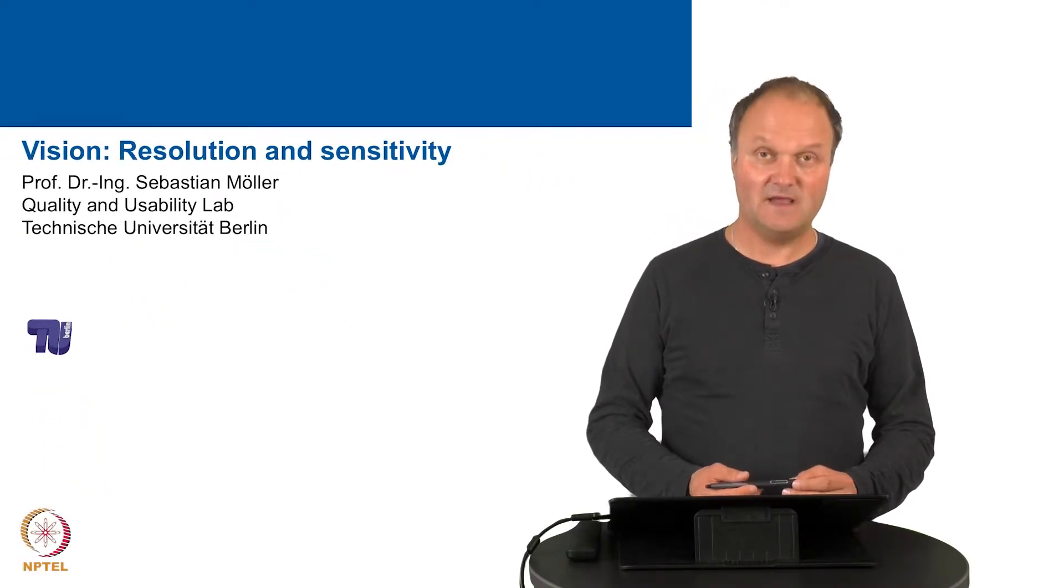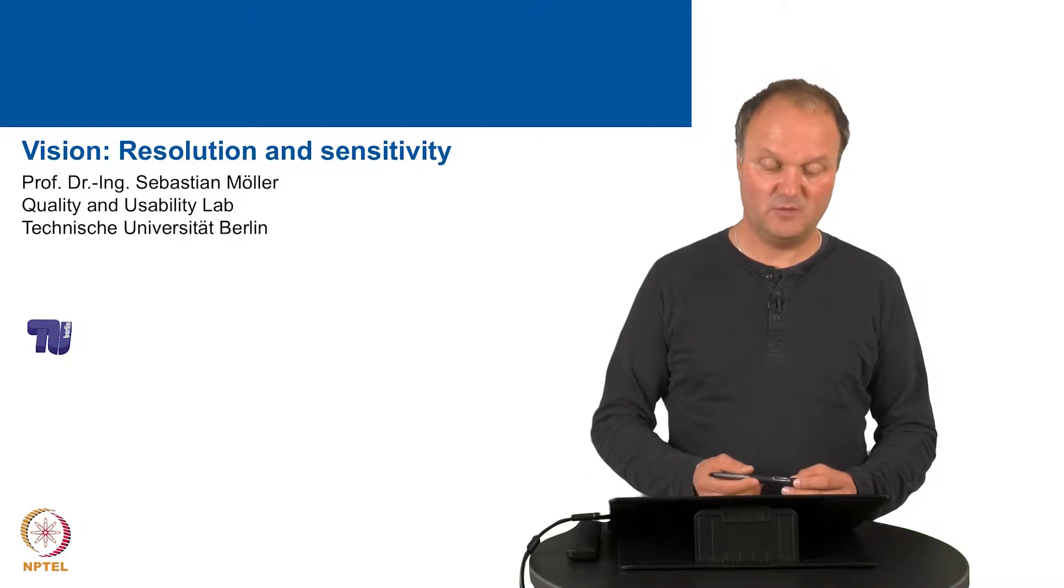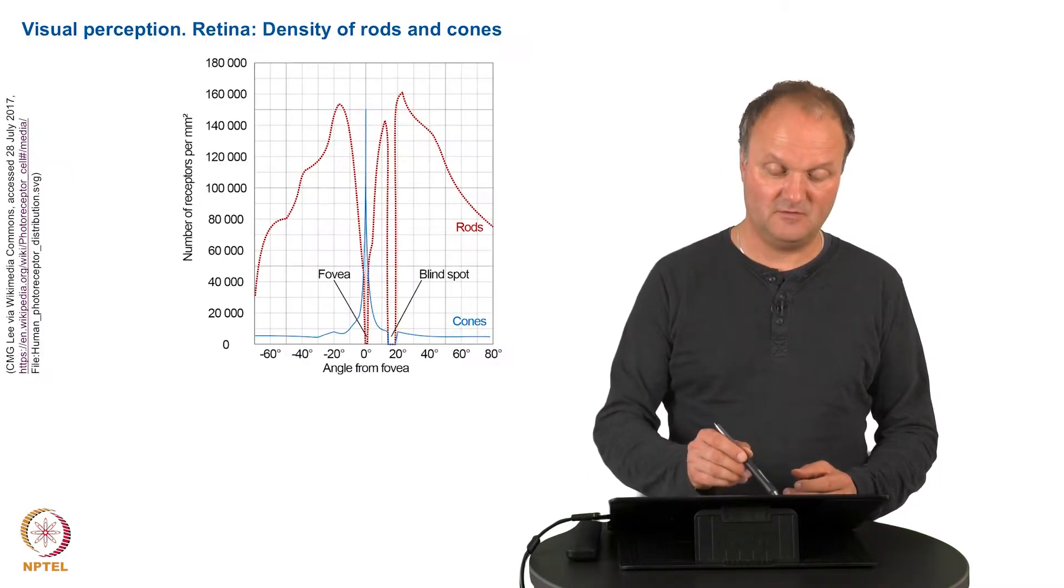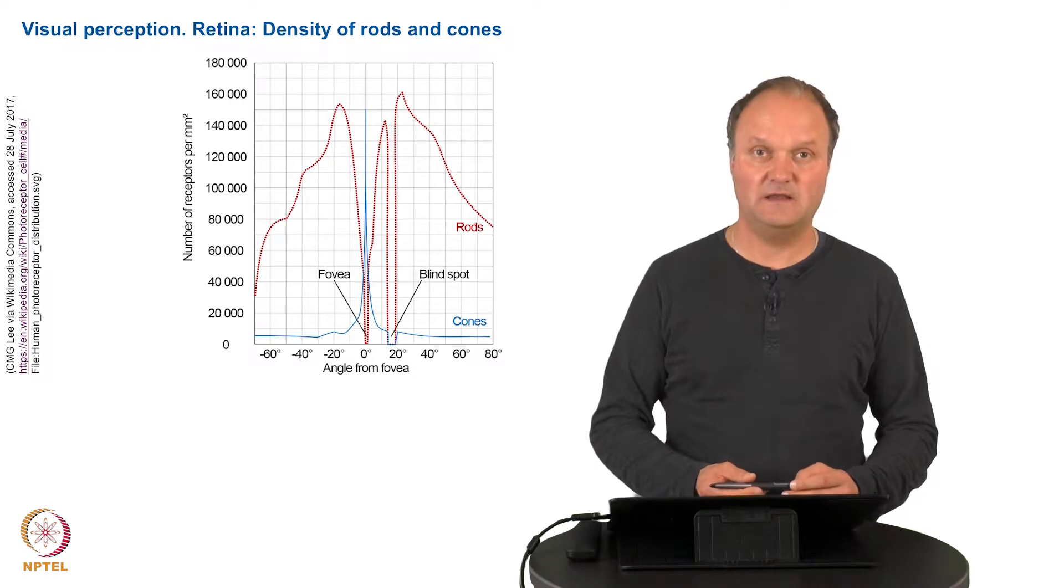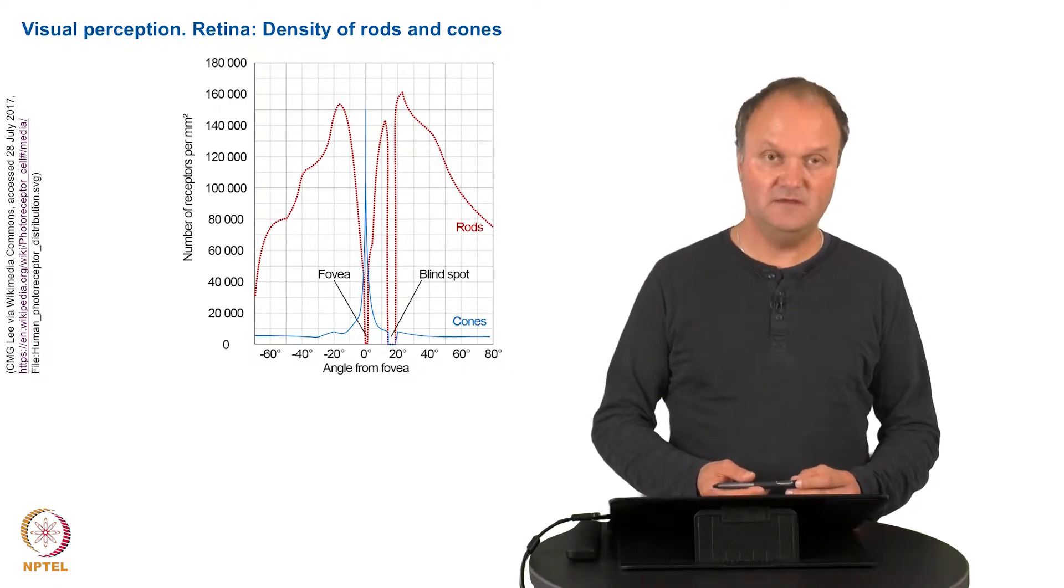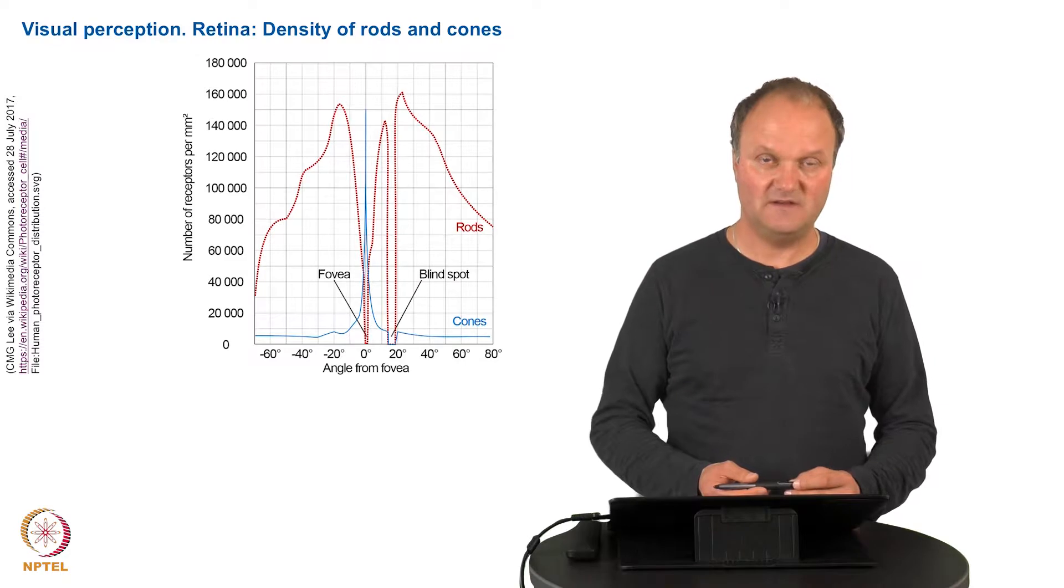The physical setup of our eye has some implications on the resolution and the sensitivity of what we can see. I have already explained that we have an unequal number of rods and cones, and even the distribution on the retina is different for these two types of receptors.